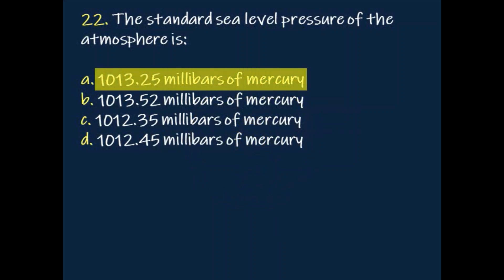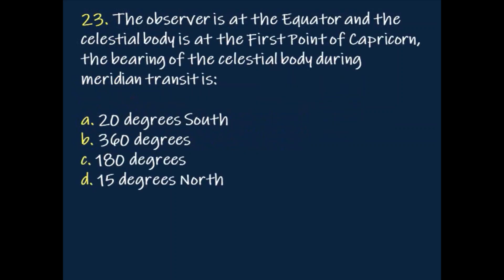Question: The standard sea level pressure of the atmosphere is? Answer: 1013.25 millibars. Question: The observer is at the equator and the celestial body is at the first point of Capricorn. The bearing of the celestial body during meridian transit is? Answer: 180 degrees.